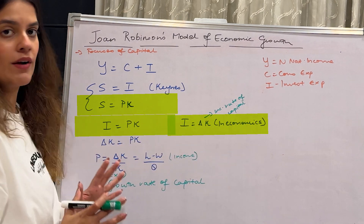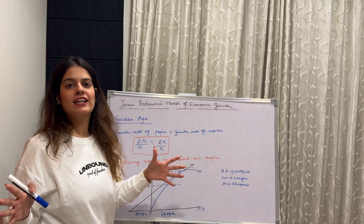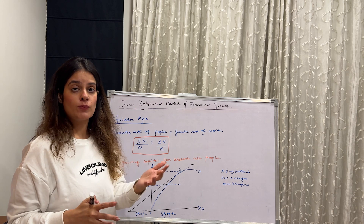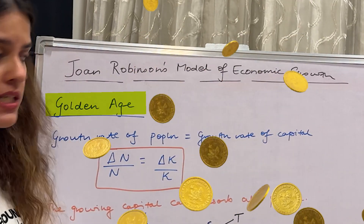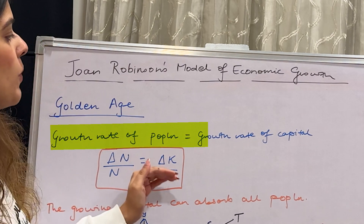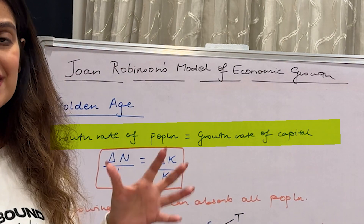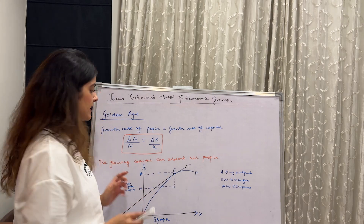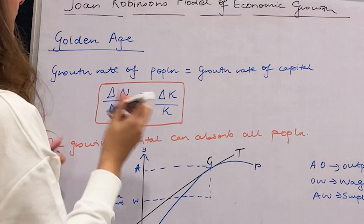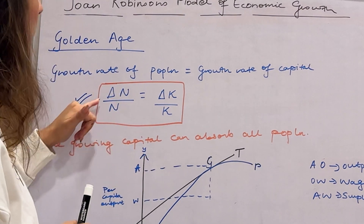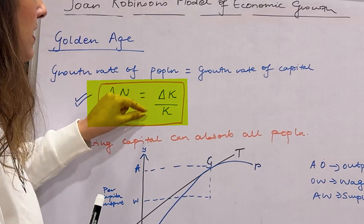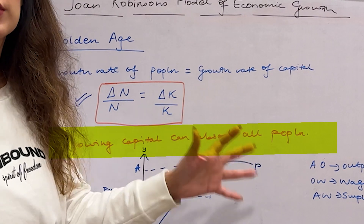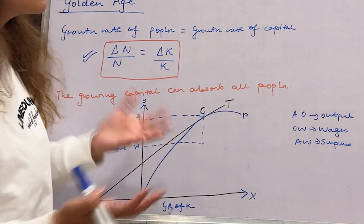Moving ahead to the Golden Age. The Golden Age is where the growth rate of population equals the growth rate of capital — that is, ΔN/N = ΔK/K. This means the growing capital can absorb all the population; as much capital as there is, people are getting absorbed into it. That's a very good situation — Golden Age, as the name suggests.